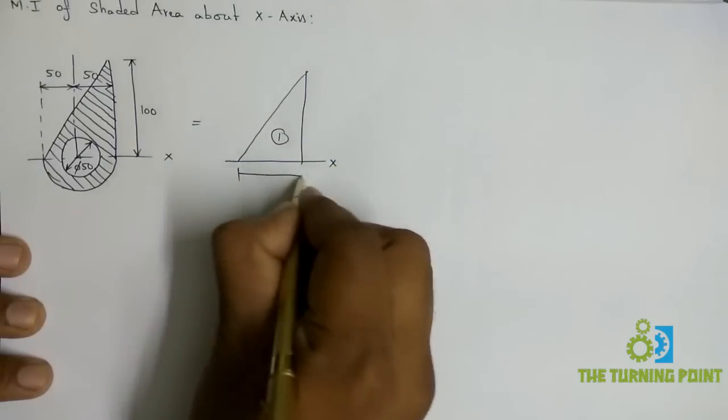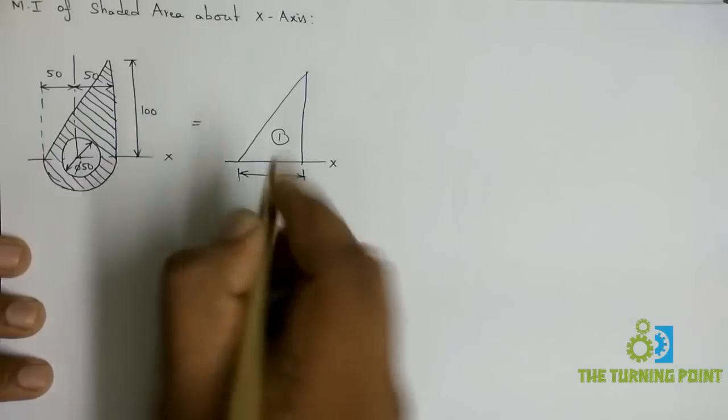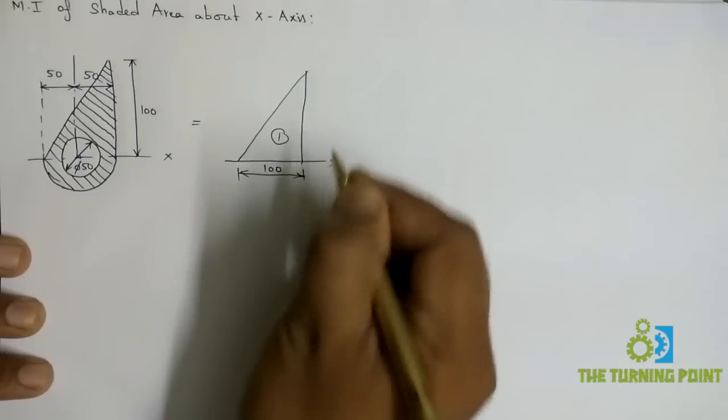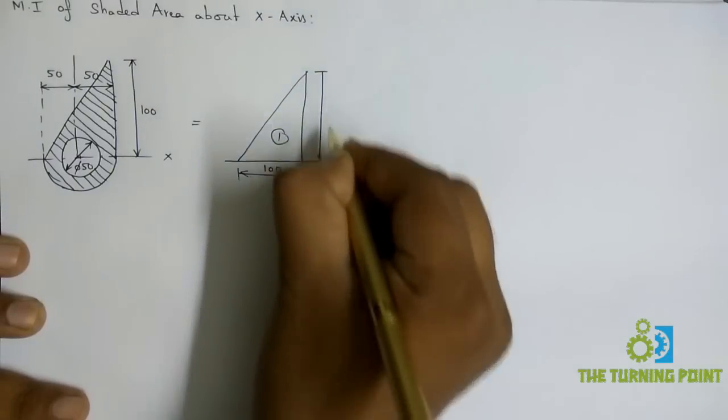The base of the right-angle triangle is 50 plus 50, so base is 100. Height is also 100.